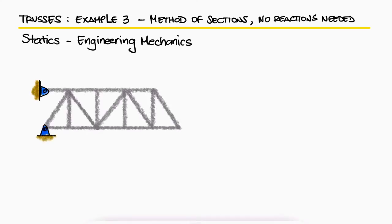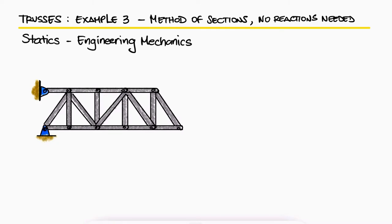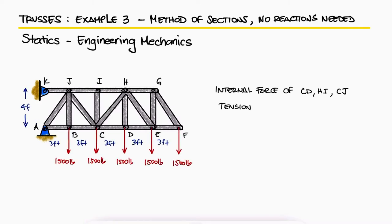For the truss shown, what is the force in the members CD, HI, and CJ, and state if they are in tension or compression?